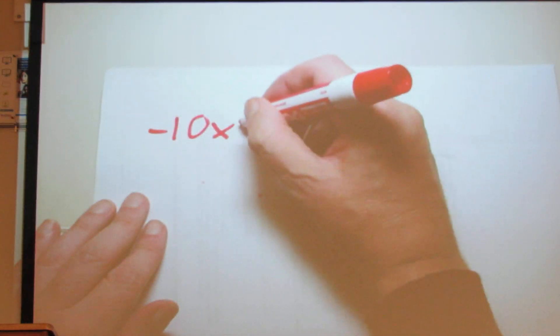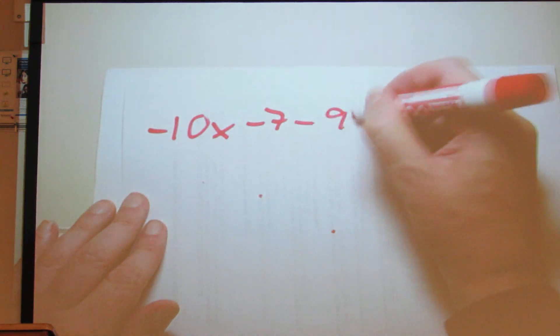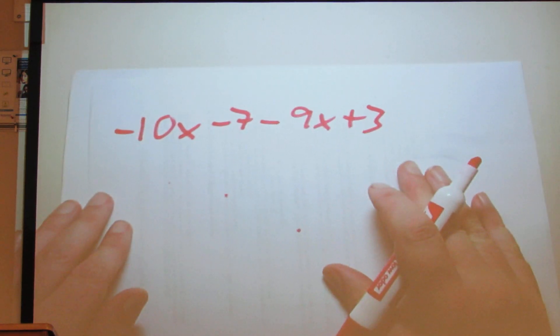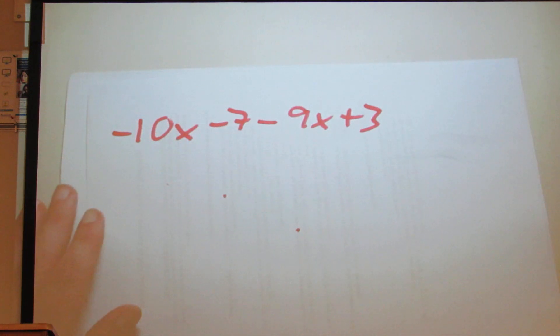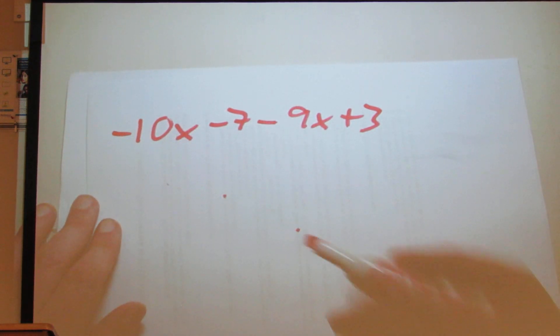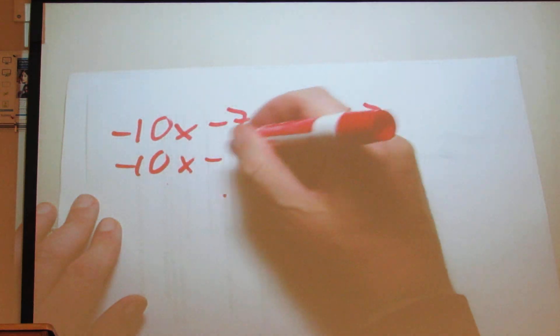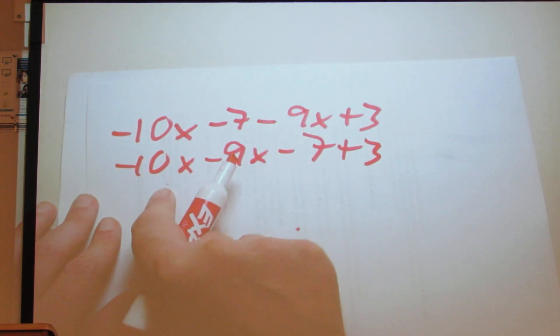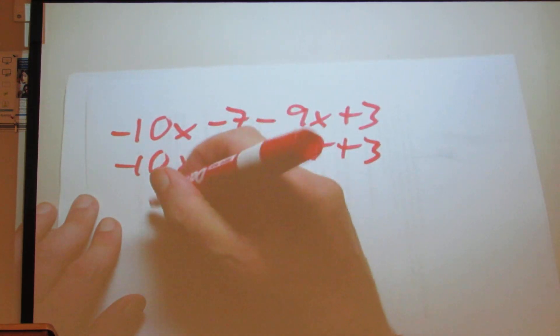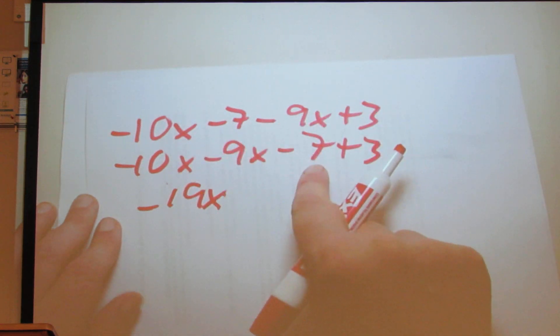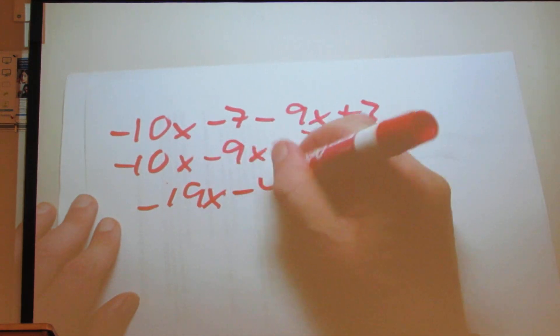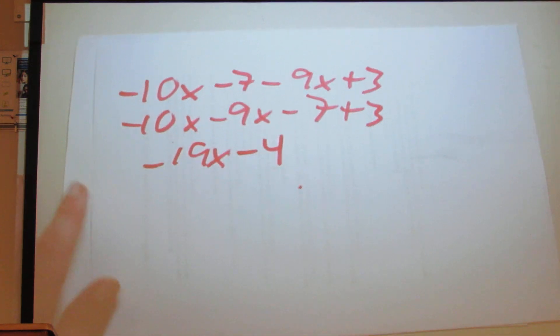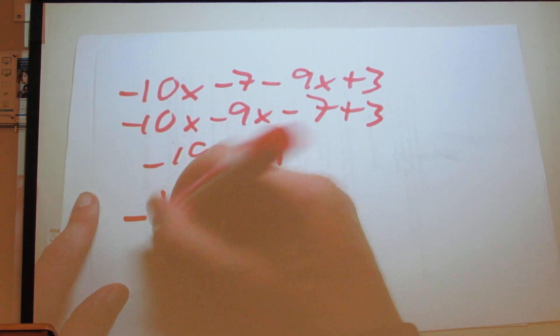Now let's simplify an expression: negative 10x minus 7 minus 9x plus 3. We combine like terms by rearranging: negative 10x minus 9x, then minus 7 plus 3. Negative 10x minus 9x is negative 19x; negative 7 plus 3 is minus 4. So the answer is negative 19x minus 4.